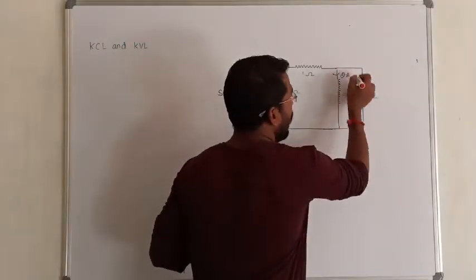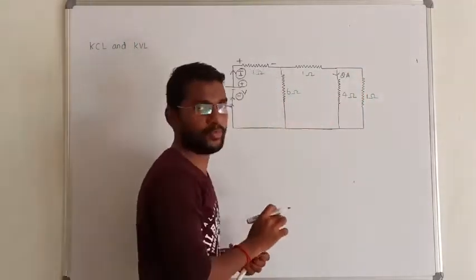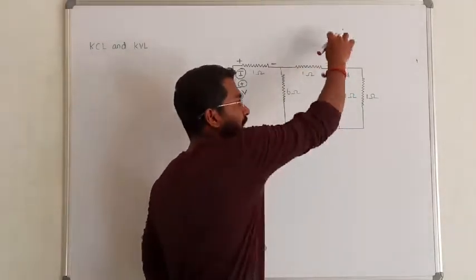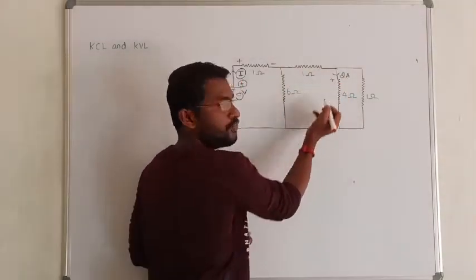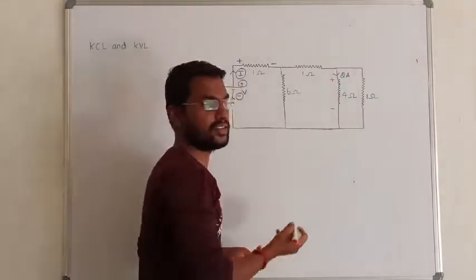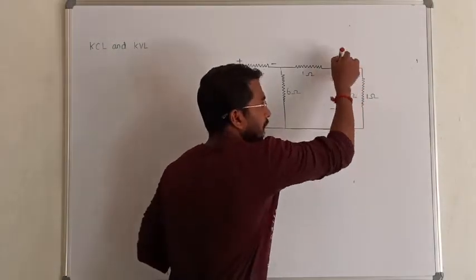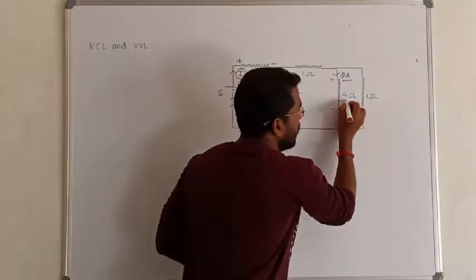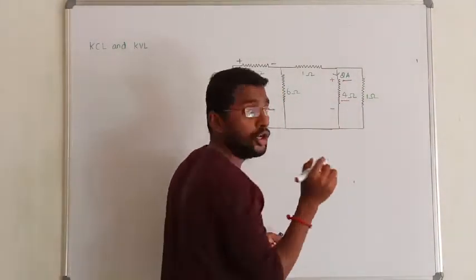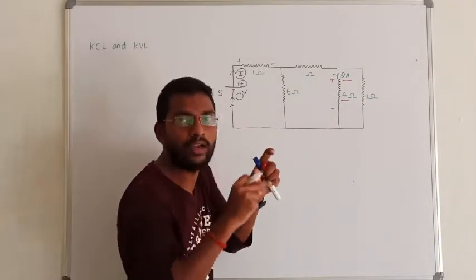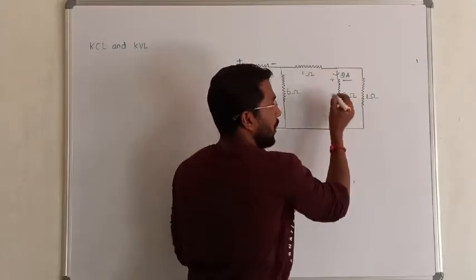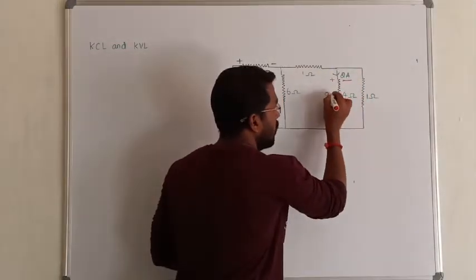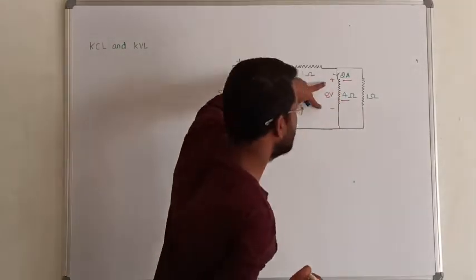The current level is 2A. This is the resistance. The current is going down. The current entering point is plus and the leaving point is minus — there is a voltage drop. The current value is 2A and the resistance value is 4 ohms. According to Ohm's law, V equals I into R. I is 2A, R is 4 ohms, so 2 into 4 is 8 volts. This resistance drops 8 volts.